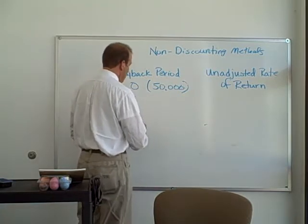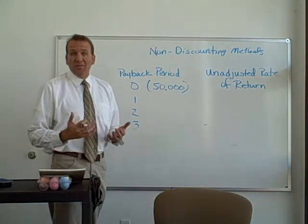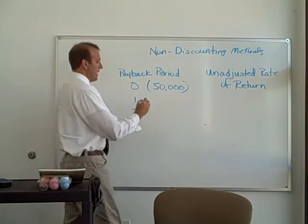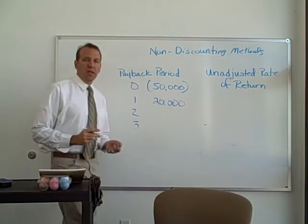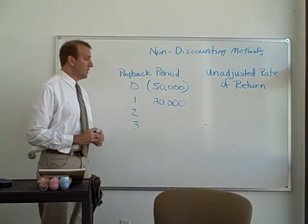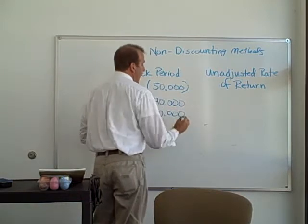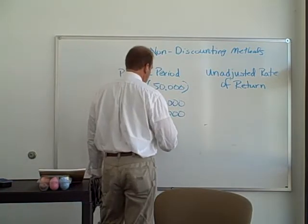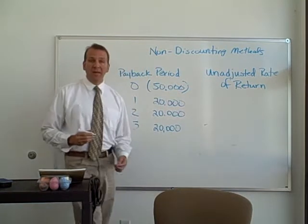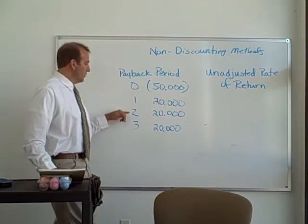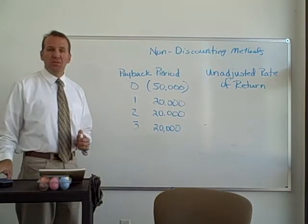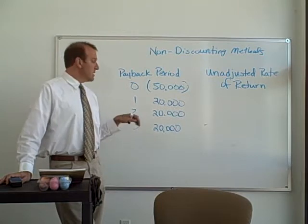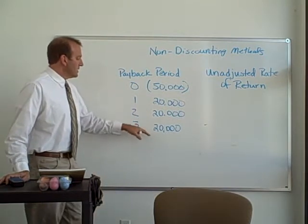When are our other cash flows coming back? This information has to be given to us or calculated. Let's say year one brings back $20,000 — have we paid back the $50,000? No, we're still $30,000 away. Year two is also $20,000 — have we paid back? No, we've only got $40,000. Year three brings another $20,000. We've now paid back the original $50,000, and it took two and a half years. If the company's threshold is four years, this would qualify.